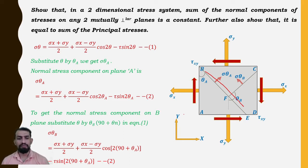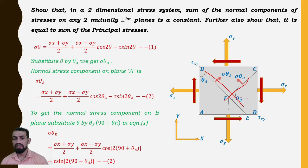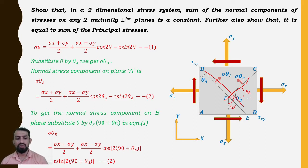To get the normal stress component on plane B, we substitute θ = θ_b = (90° + θ_a) in equation 1. Wherever θ appears we add 90°, giving: σθ_b = (σx + σy)/2 + (σx − σy)/2 · cos(2·(90° + θ_a)) − τ·sin(2·(90° + θ_a)), which is equation 3.